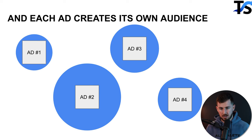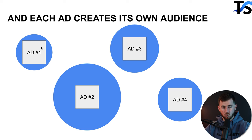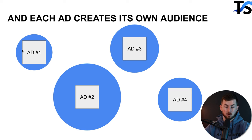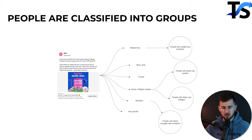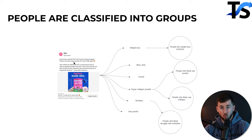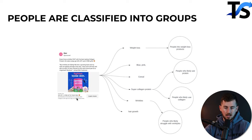To illustrate: Ad 1 appeals to a certain audience size, Ad 2 appeals to way more people, Ad 3 a decent amount, Ad 4 marginally smaller. Ad 2 can do a phenomenal job spending a lot of money whereas Ad 1 can't — because each ad appeals to a different number of people. Every time you create an ad, Facebook creates an audience of people who resonate with that specific ad.